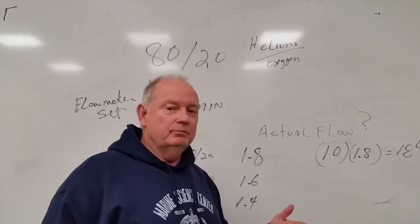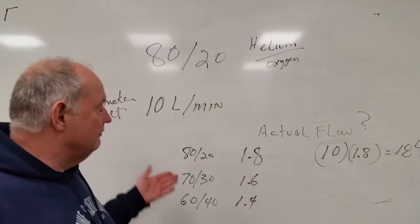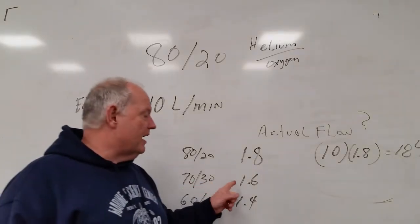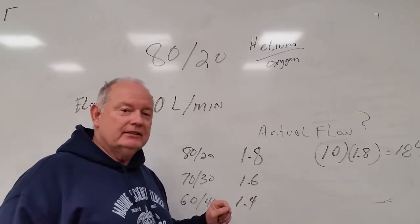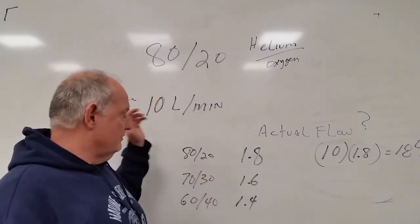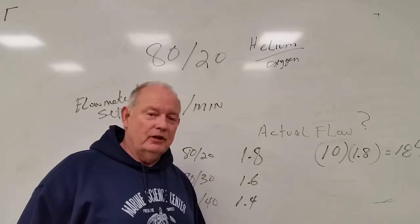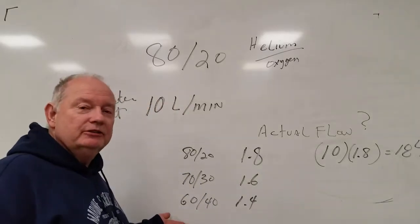If you're using a 70-30 mix, your flow factor is 1.6. So if this was 70-30, it would then give you 16 liters total flow.